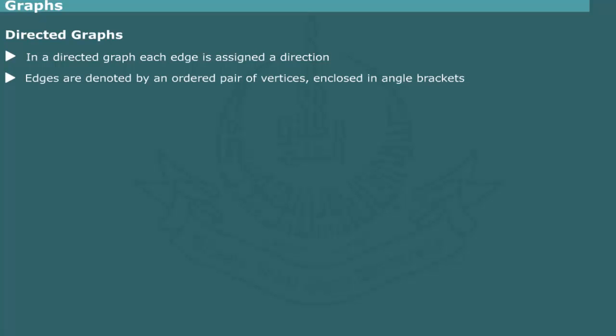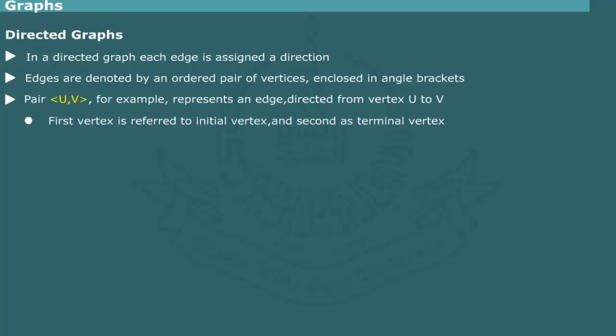Directed Graph: In a directed graph, each edge is assigned a direction. The edges of a directed graph are usually denoted by an ordered pair of vertices enclosed in angle brackets. Thus, the pair <u,v> represents an edge which starts at vertex u and ends at vertex v. The first vertex is referred to as initial vertex and the second as terminal vertex. As such, <u,v> and <v,u> represent different edges connecting the same pair of vertices. A directed graph is also termed as digraph or network.